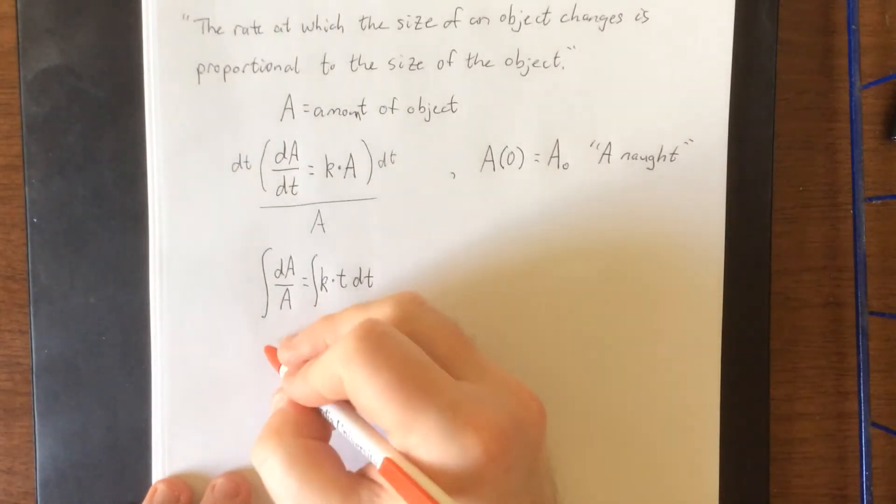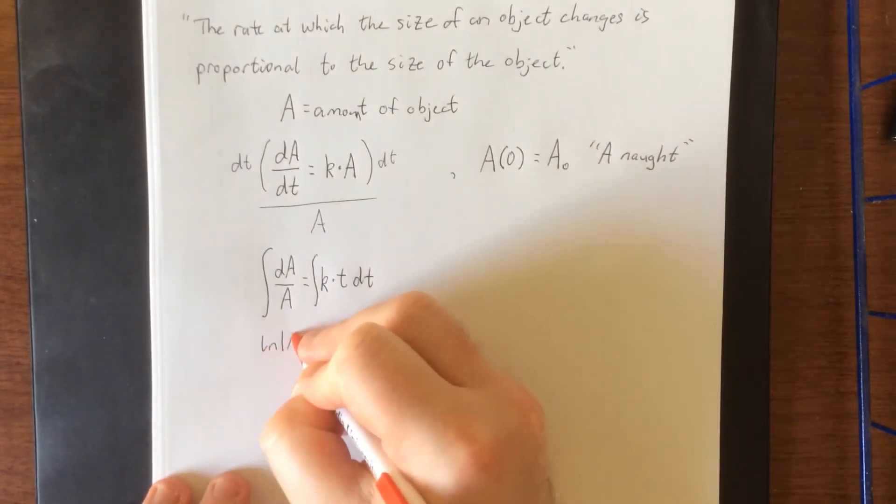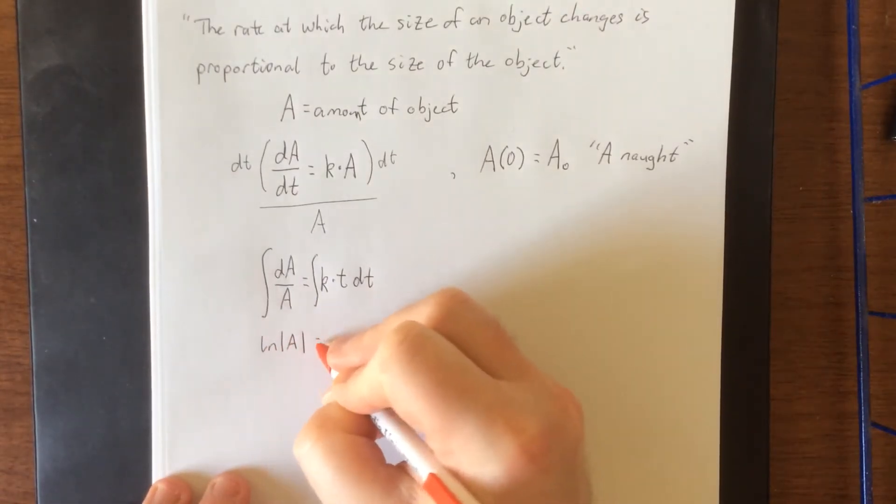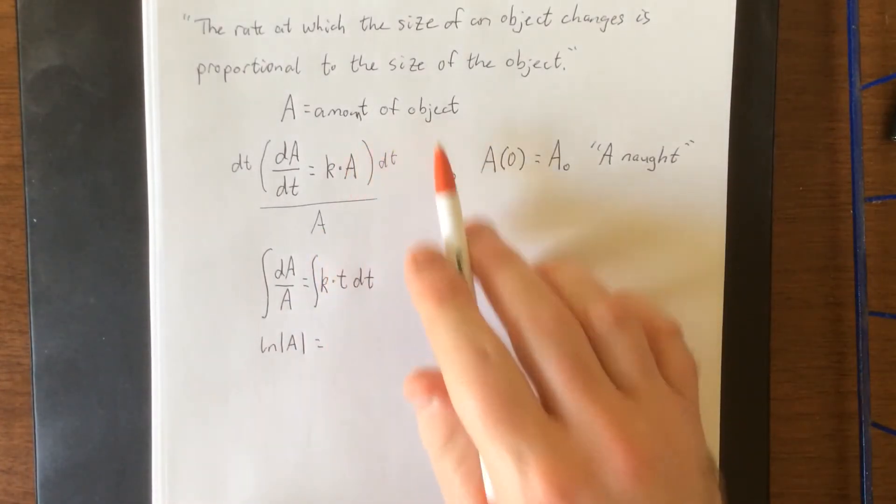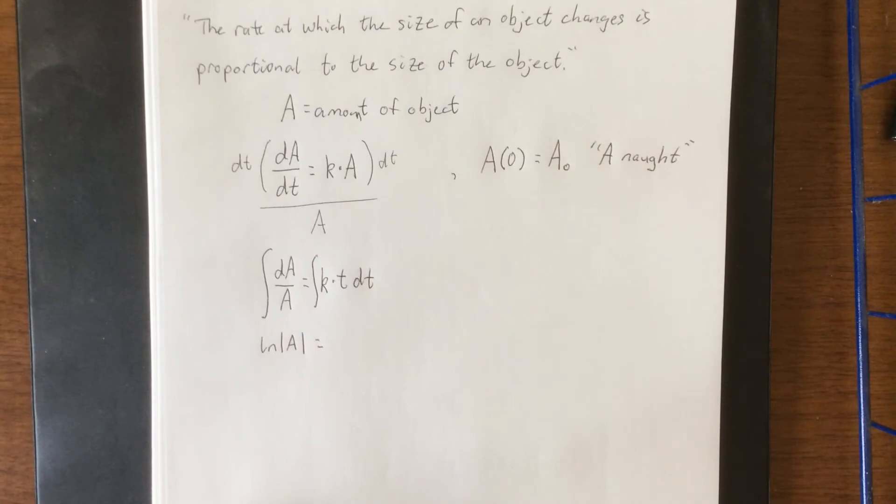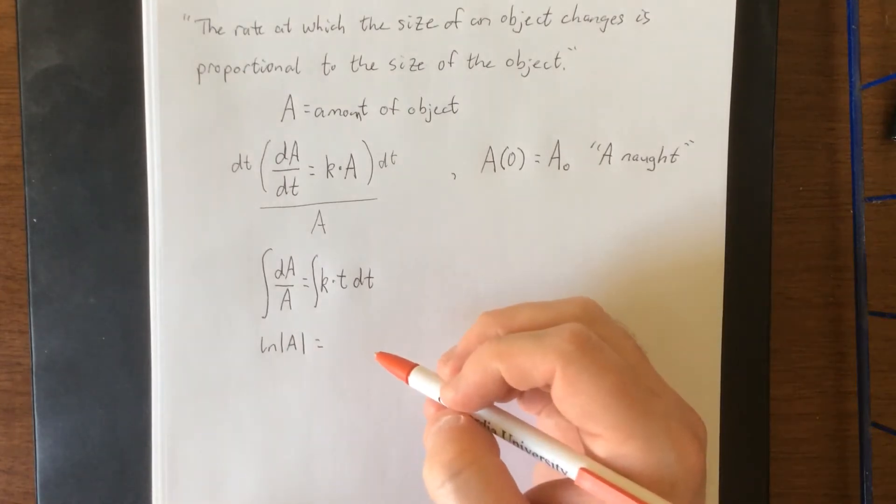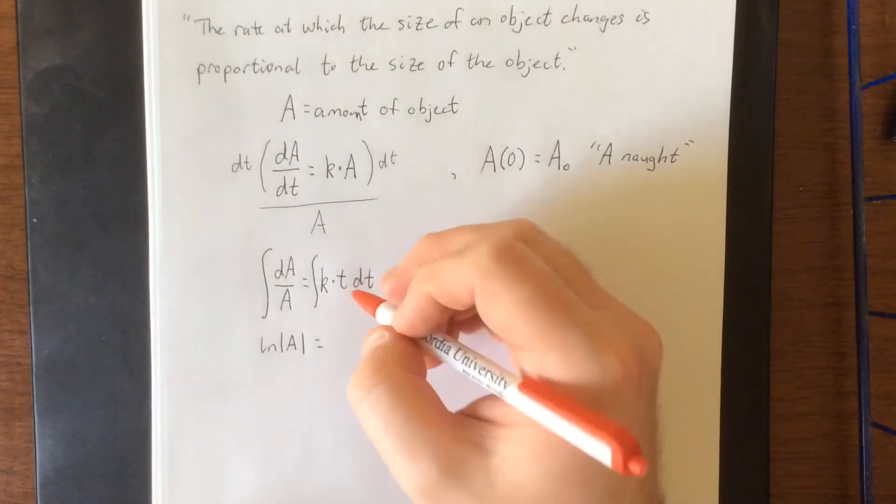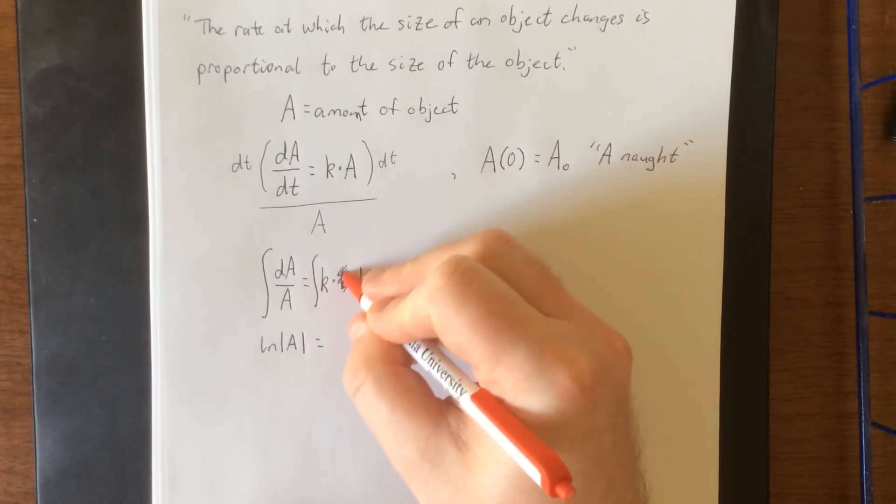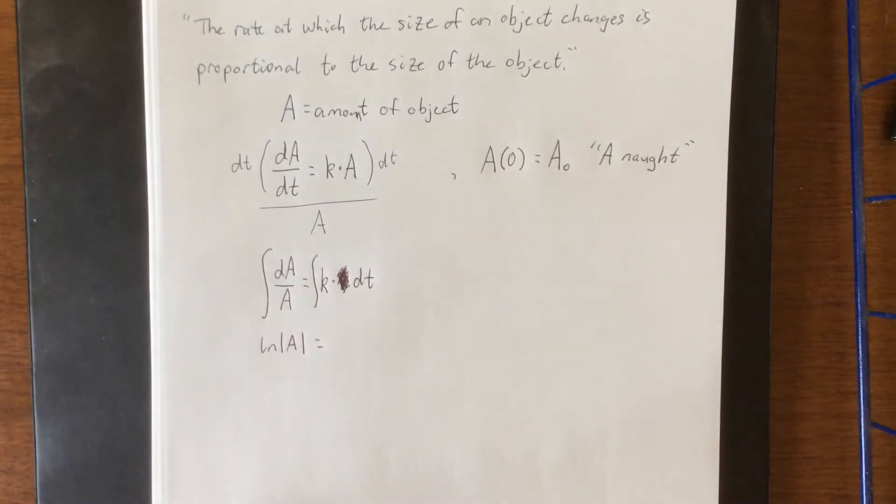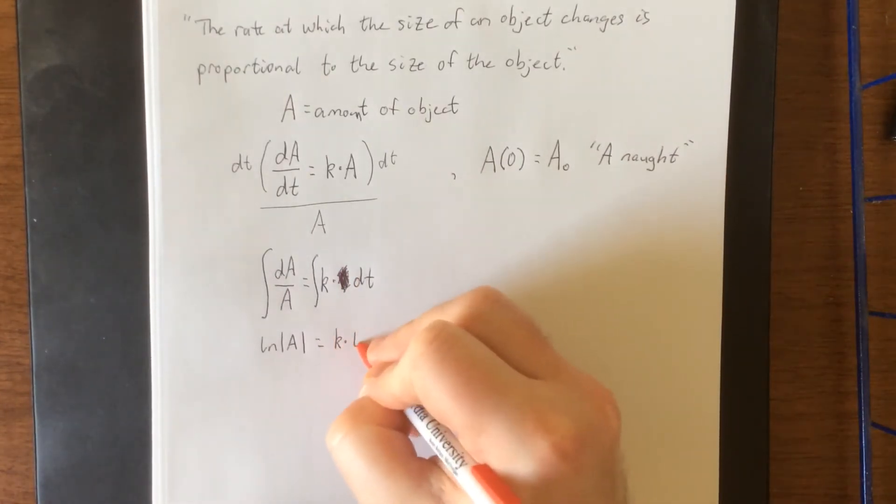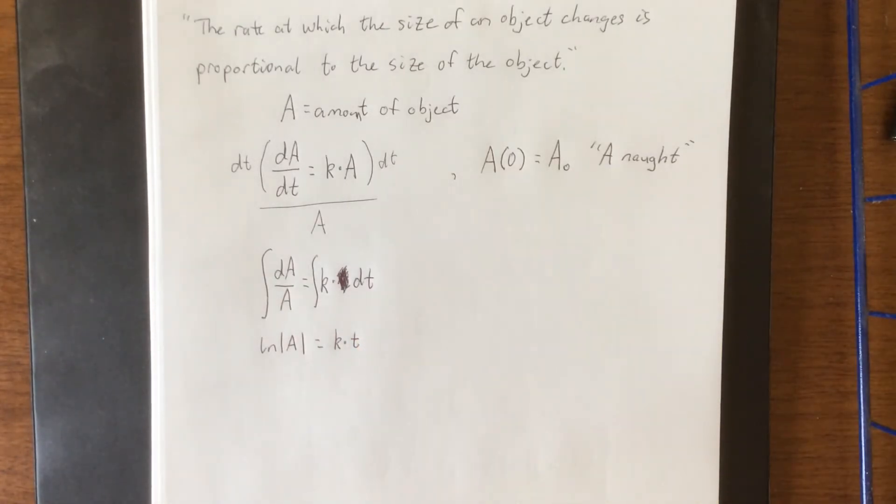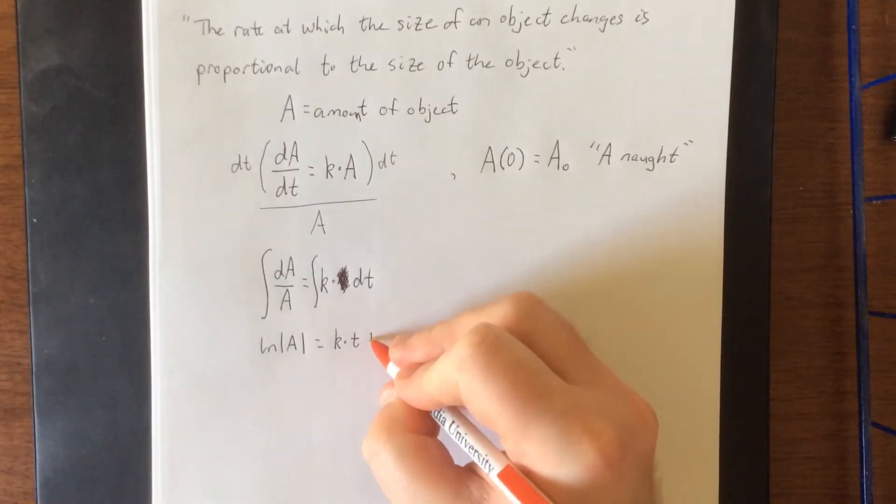Integrating both sides we get the natural log of the absolute value of A. Though the absolute value is kind of superfluous and redundant, since A is referring to the amount of an object, A shouldn't be allowed to be negative. This t really shouldn't be here—that's me jumping the gun, so my apologies about that.